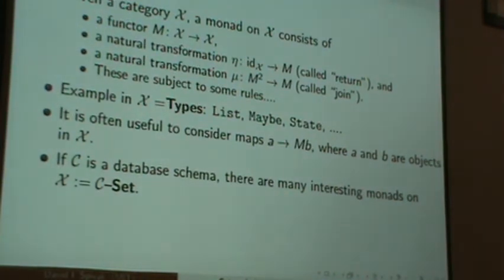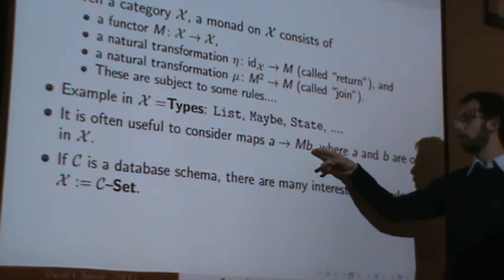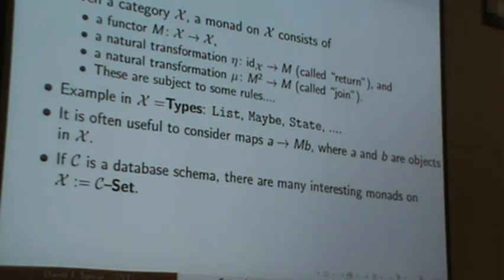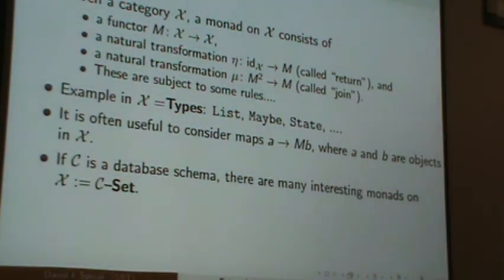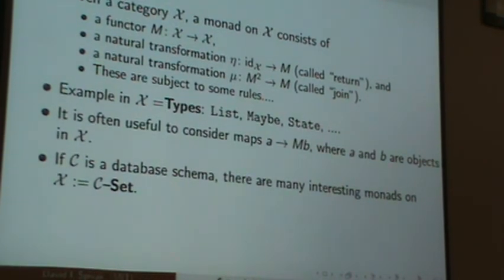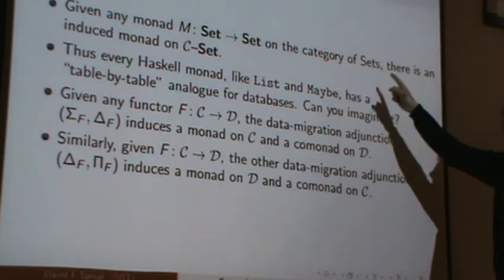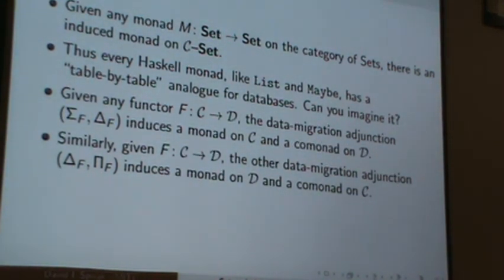And sometimes it's useful, like for the Clyde's idea, to think about maps from A, from some arbitrary type, into the monad applied to B. But maybe that will be interesting or not. But let's say C is a database schema, then there are many interesting monads on C set. So some sources. For any monad on sets, there is an induced monad on C sets. Thus, every Haskell monad like list and maybe has a table by table analog for databases.